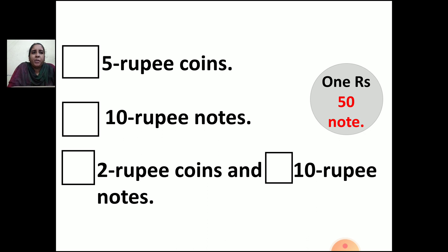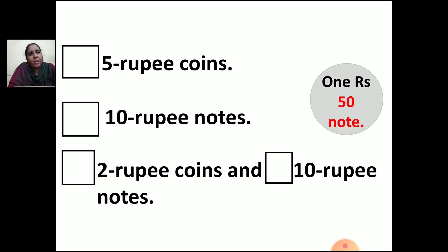Now here you can see a 150 rupee note. And on the other side you can see the 5 rupee coins, 10 rupee notes, 2 rupee coin and 10 rupee note is given. So you have to see how many 5 rupee coins you will take to make 150 rupees, how many 10 rupee notes, how many 2 rupee coins and 10 rupee notes you will take to make 150 rupees.